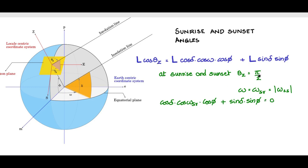And from here you can get cos ω at sunrise which is cos inverse of minus tan δ tan φ. This is obtainable directly from this step. You take sin δ sin φ to the other side, and then cos ωsr is minus tan δ tan φ. And ωsr will be cos inverse of minus tan δ tan φ.